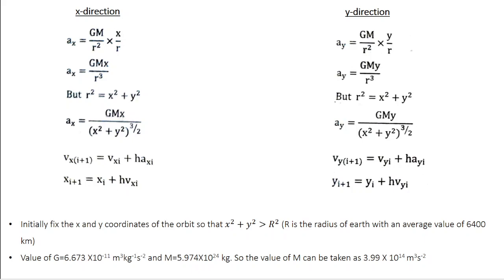The average value of Earth's radius is given by 6400 km. So when you input the initial values of X and Y coordinates, you have to make sure that this condition is satisfied. Also in the expression for acceleration, G and M are constant. The value of G is given by 6.673×10^(-11) m³/(kg·s²), and mass of Earth is 5.974×10^24 kg.